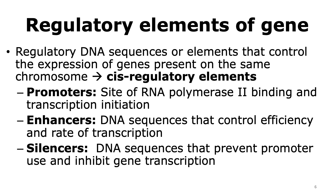For a gene to be transcribed, there are regulatory elements present. These are DNA sequences that control the expression of the genes, and these regulatory DNA sequences are present on the same chromosome as the gene — hence they are called cis-regulatory elements. We're going to look at three such regulatory elements: promoters, where RNA polymerase 2 will bind and transcription will be initiated; enhancers, which control the efficiency and rate of transcription; and silencers, which are DNA sequences that prevent promoter use and inhibit gene transcription.